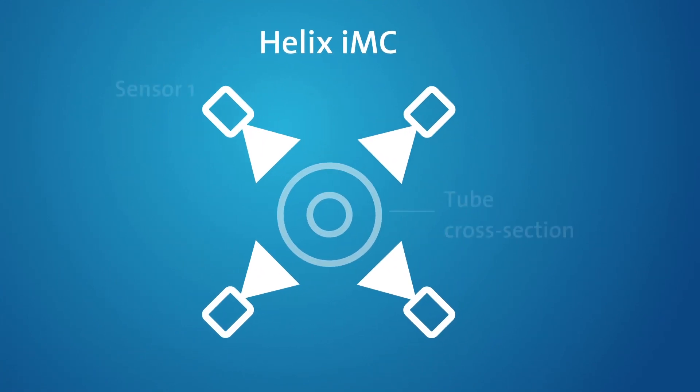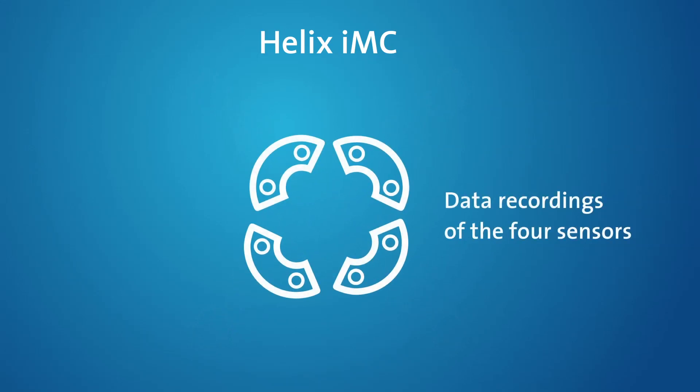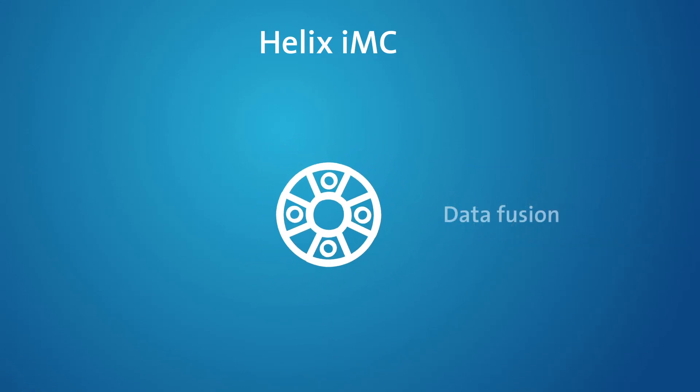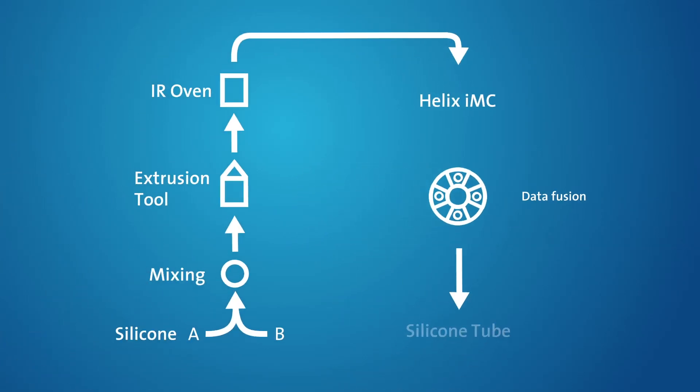Helix IMC uses a tomographic system that records and documents the tube size and shape during extrusion. An algorithm calculates a cross-section view from these measured values. This enables an exact and continuous measurement of the inner diameter and wall thickness of the silicone tubing during the production process.